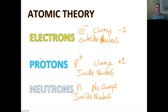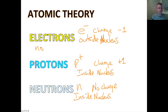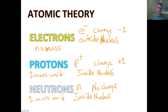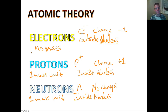The only other thing we need to look at is the mass of these particles. Though electrons do have mass, for our purposes we're going to say they have no mass. Protons have a mass of one mass unit, and neutrons also have a mass of one mass unit. The electron is so small that it has a negligible mass.